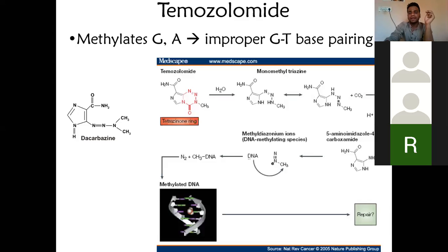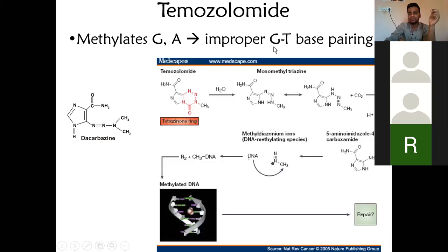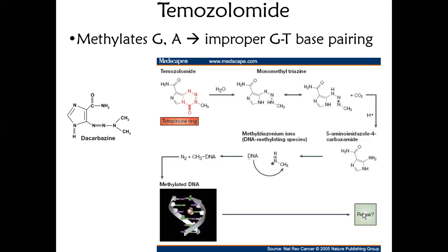Because of temozolomide's methylation of guanine and adenine, there is again improper base pairing — the normal pairing is A with T and C with G. This improper pairing prevents replication and transcription, so translation cannot happen and the cell will die. There is a chance that the damage gets repaired via checkpoint mechanisms, but if that repair also doesn't happen, the cancer will continue.